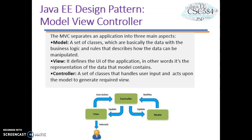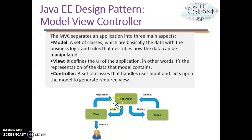The end user interacts with the view, which is basically the UI layer. Upon a user action — for example, clicking a button or a mouse hover event — the view invokes the corresponding controller. The controller then determines the model and updates it as per the requirement. Once the model is updated, the controller generates the view and updates it for the end user.